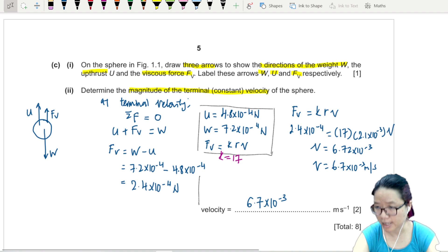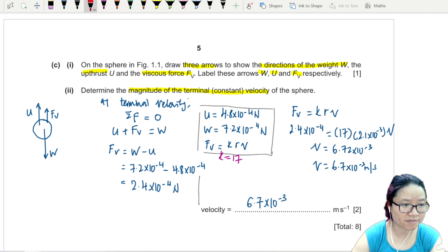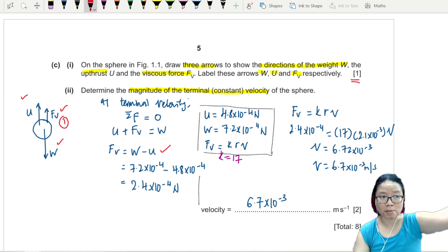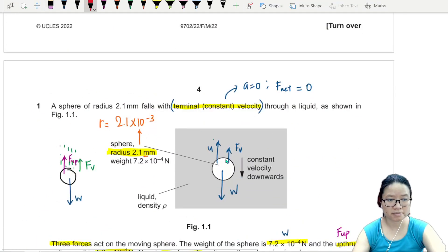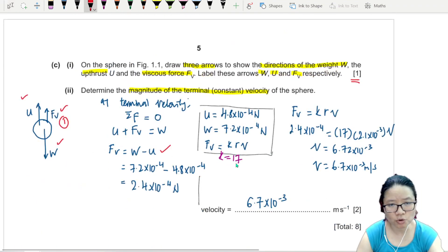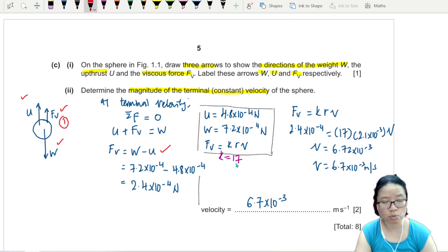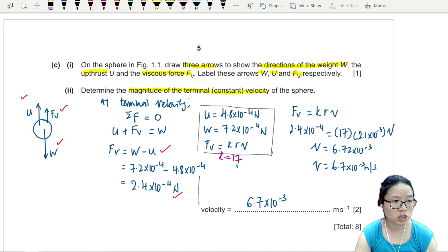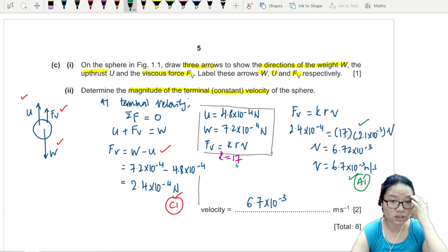This kind of calculation is very standard. As long as you follow the lead of the question, it should be fairly easy to do. If you manage to find FV using W minus U, they try to guide you. If you label these three correct directions, you get one mark already. Make sure you label on the diagram on top. Once you label the diagram, you know it's terminal velocity, so the upward force must equal the downward force. If you manage to find your 2.4 times 10 to the power of negative 4, this is C1, and substituting into the equation leading to the answer is A1. Since all the data given is 2SF, we also follow 2SF.